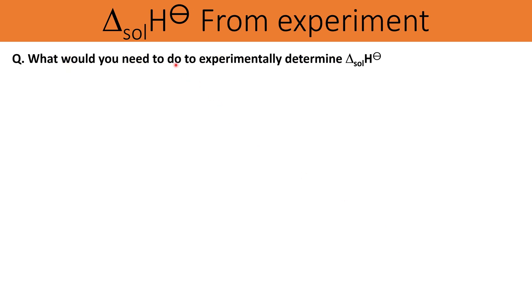The enthalpy change of solution can be calculated via an experiment you've probably done before. You place a polystyrene cup in a beaker, add water, measure the starting temperature, dissolve a solid in it, and then measure the final temperature. You then use q = mcΔT to calculate the energy change, and divide by the number of moles of compound dissolved to work out the enthalpy change of solution.